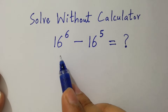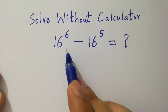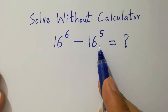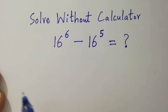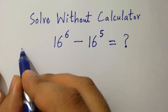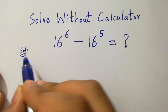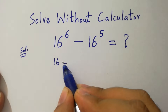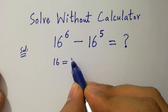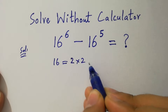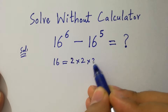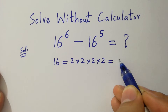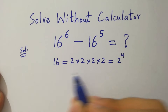Hello friends! 16 to the power 6 minus 16 to the power 5 equals what? Let's find the solution. Since 16 equals 2 times 2 is 4, 4 times 2 is 8, 8 times 2 is 16, so 16 equals 2 to the power 4.